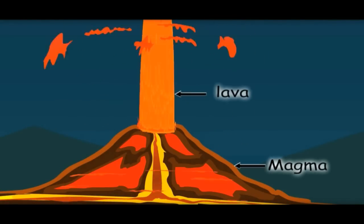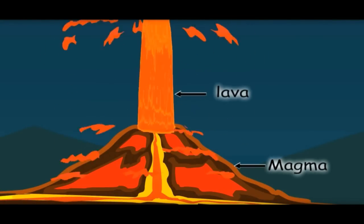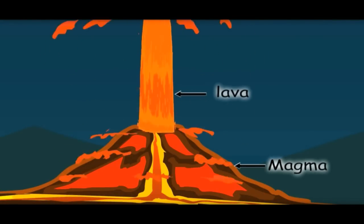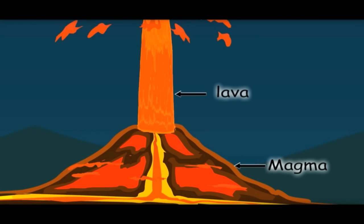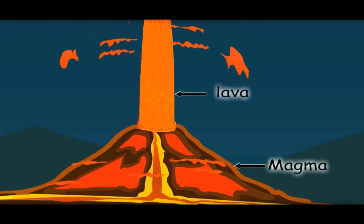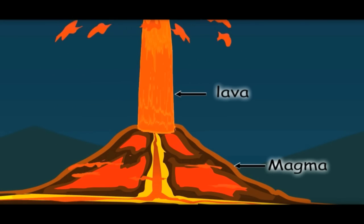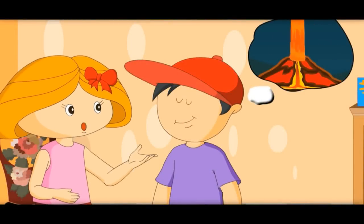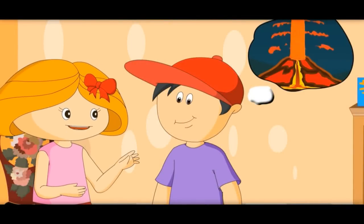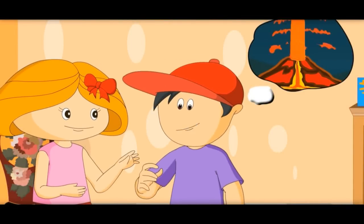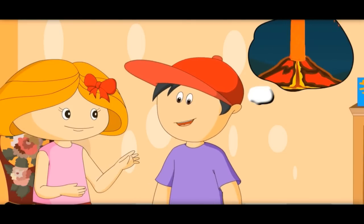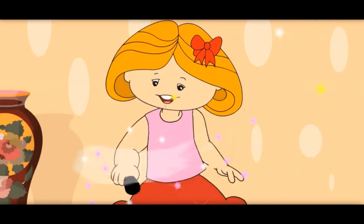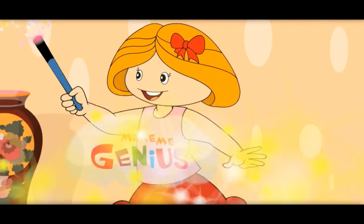This red-colored liquid is lava. It is called magma when it is inside the Earth, and it is called lava when it comes out of the Earth. Scientists study this lava to understand what is inside the Earth. So from lava we can know what is inside the Earth.